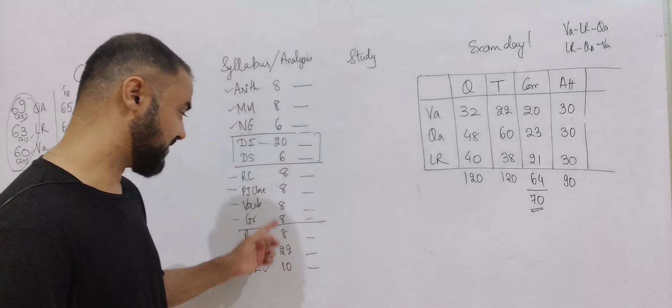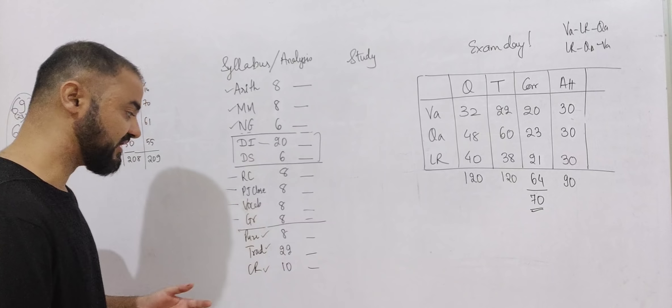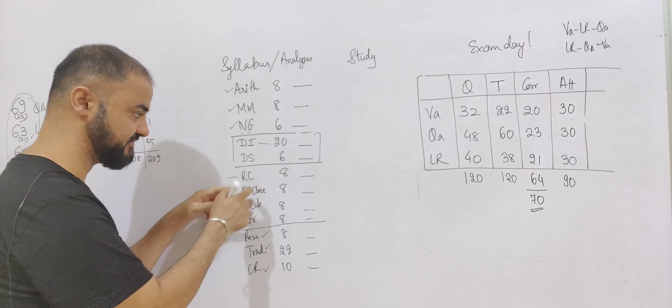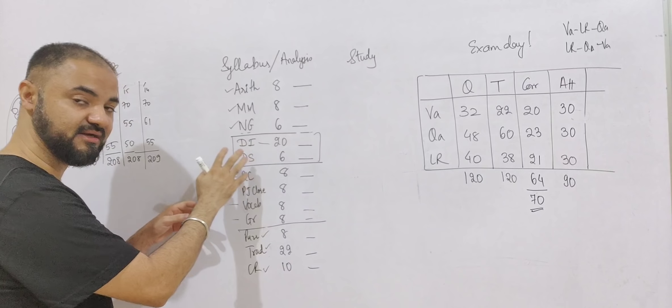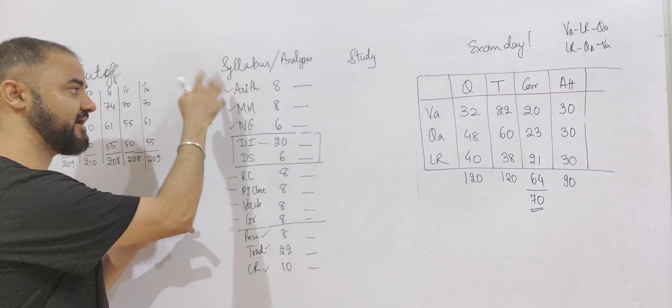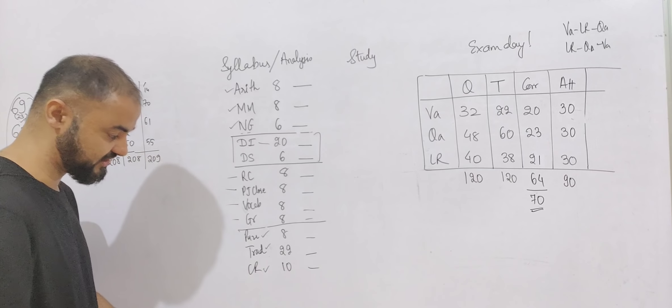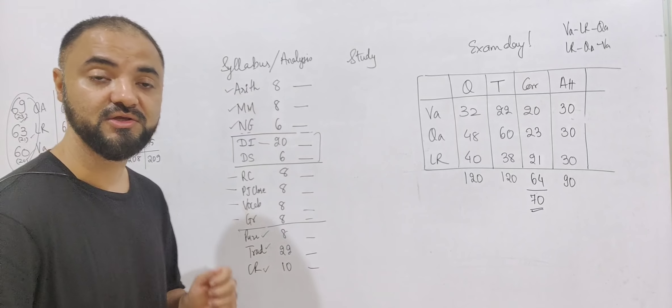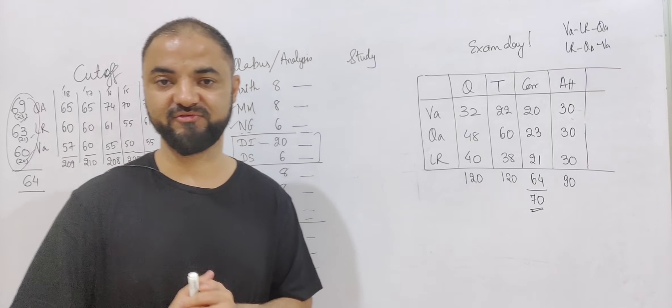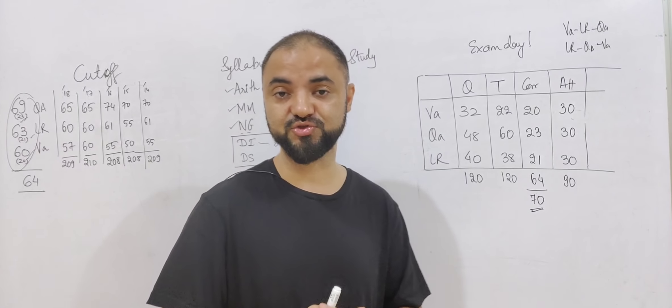If I compare with CAT exam, the only thing common is para jumble and RC which is 12 marks here. DI is a different type of question and math is a bit common. Otherwise everything is different from the CAT exam. So you need one month time to prepare for all these things. That's what we've done at Cat King.